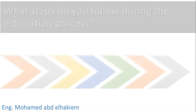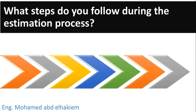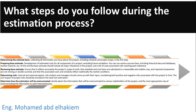What steps do you follow during the estimation process? First, determining the estimate basis: collecting all information you have about the project, including schedule and project scope. Second, preparing the base estimate: developing estimated costs for all components of a project, excluding future escalation, using sources such as historical data, databases, and market research. The base estimate should include all major milestones in the project and a list of costs associated with reaching each milestone.